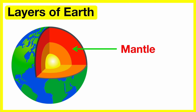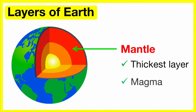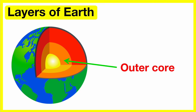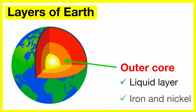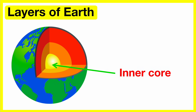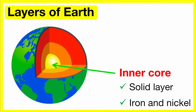The mantle is the next layer. It's the thickest layer of the Earth. This layer is mostly made up of magma. The outer core is the layer which surrounds the inner core. It's a liquid layer made up of the metals iron and nickel. The inner core is right in the center of the Earth. It's the hottest part. It's solid and it's made up of the metals iron and nickel.